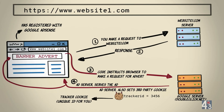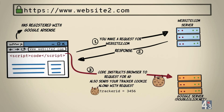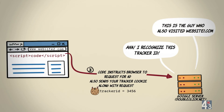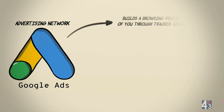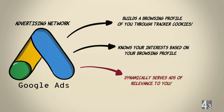This third-party cookie is a unique ID set for you. When you visit another website, let's say WebsiteTwo.com, which is also registered on Google AdSense, your browser sends your unique tracker cookie along with the request. The Google ad server DoubleClick.net recognizes your ID and makes a unique cross-site browsing profile of you. This way, as it builds a browsing profile of you through tracker cookies, the Google advertising network knows your interests and dynamically serves ads of relevance to you.